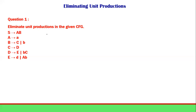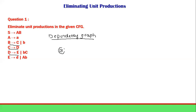To eliminate unit productions, we use a dependency graph. This dependency graph tells us which variable is dependent upon which other variables. The unit productions are B → C, C → D, and D → E. So in the dependency graph: B points to C, C points to D, and D points to E.